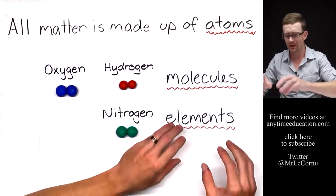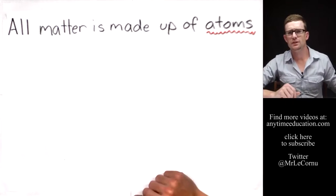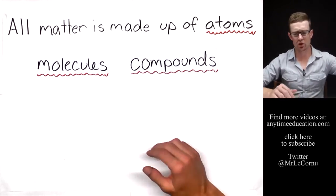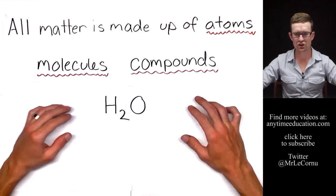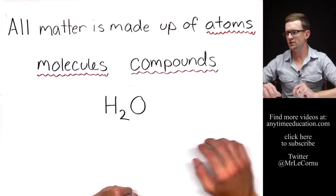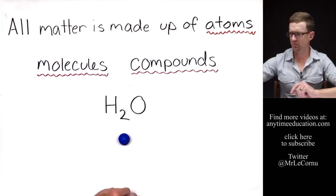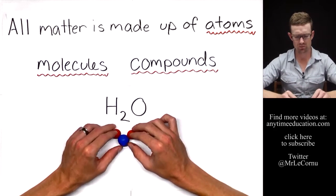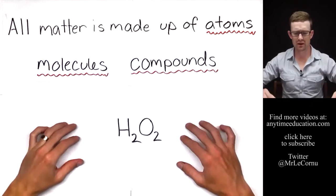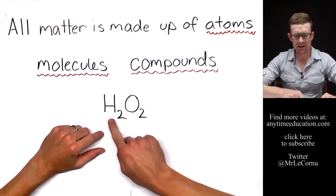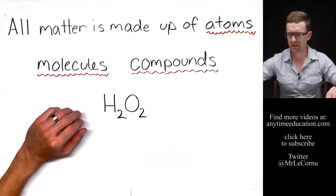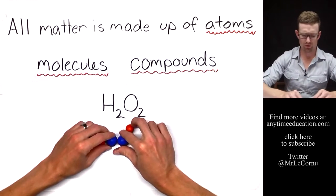When different atoms chemically combine we call those molecules compounds. An example of a compound is one that I'm sure you've all heard of: H2O. That means it's a molecule made of two hydrogen atoms and one oxygen atom. Let's get our one oxygen atom, put it together with our two hydrogen atoms. That makes the compound water. If we change that compound by only one atom and make it H2O2, we make a totally different compound. When we put together H2O2 we form hydrogen peroxide.